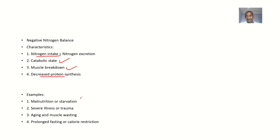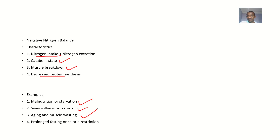Examples of negative nitrogen balance include malnutrition or starvation, severe illness or trauma, aging with muscle wasting — where muscle atrophy causes people to become shorter — and prolonged fasting or calorie restriction. In all these cases, nitrogen excretion is higher than intake.